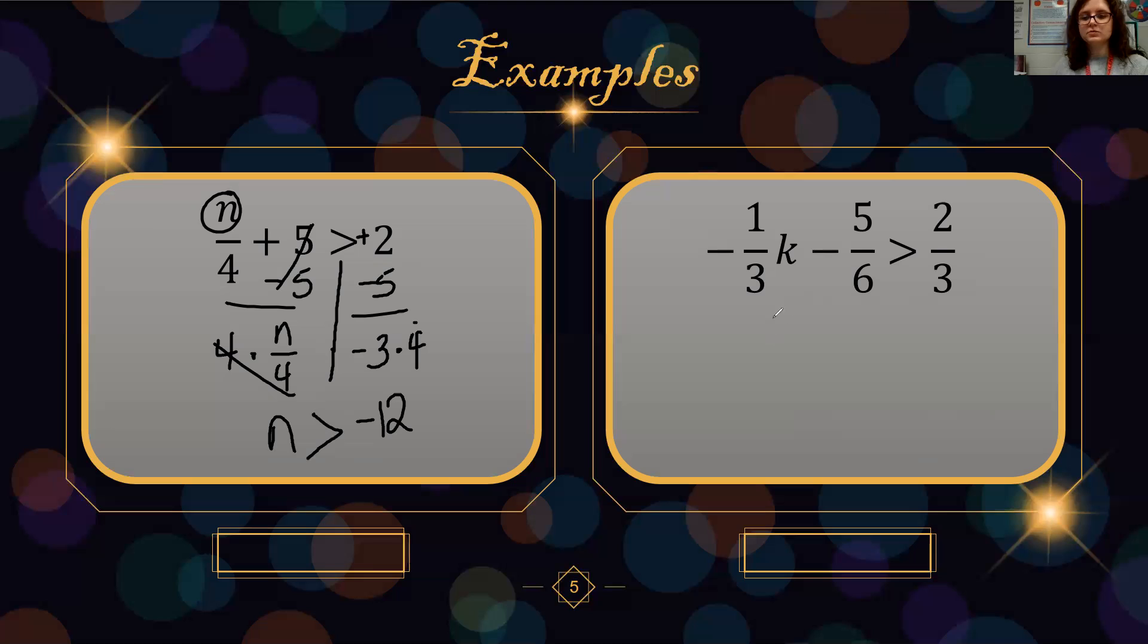This next one has fractions. We follow the same steps. We will undo our subtraction first. So add 5 sixths to both sides. These cancel. We have negative 1 third K on one side. These are different denominators. We need to change our 2 thirds. We can multiply 3 times 2 to get 6, and 2 times 2 to get 4. So 4 sixths plus 5 sixths is 9 sixths.